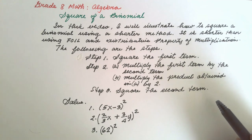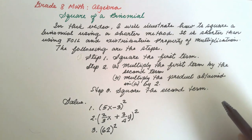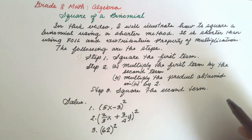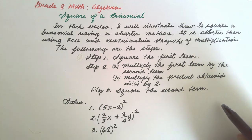In this video, I will illustrate how to square a binomial using a shorter method. It is shorter than using FOIL and the distributive property of multiplication. The following are the steps.